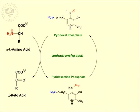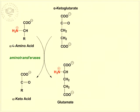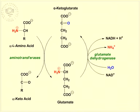The transamination itself does not lead to removal of an amino group, but only to its transfer to an alpha-keto acid, which is converted into a new amino acid. When transamination of any amino acid with alpha-ketoglutarate as an acceptor of the amino group is followed by oxidative deamination of the glutamate formed, this combined process is called transdeamination. The oxidative deamination of glutamate is catalyzed by a highly active glutamate dehydrogenase, yielding ammonia and regenerating alpha-ketoglutarate for use in a subsequent transamination reaction.